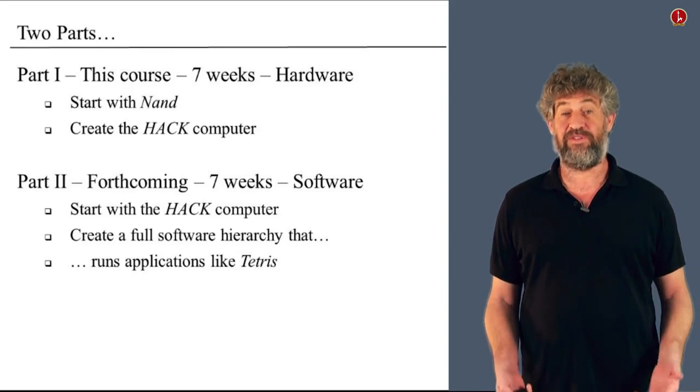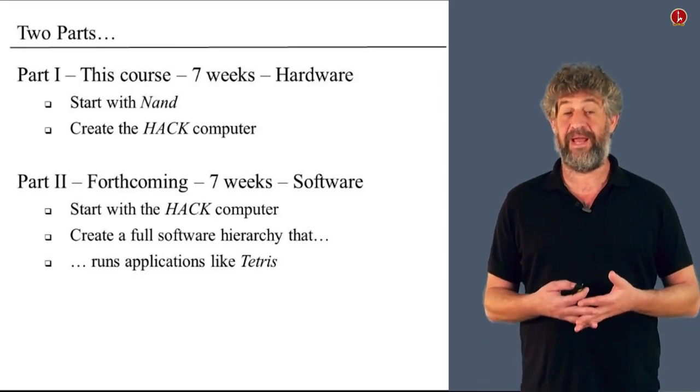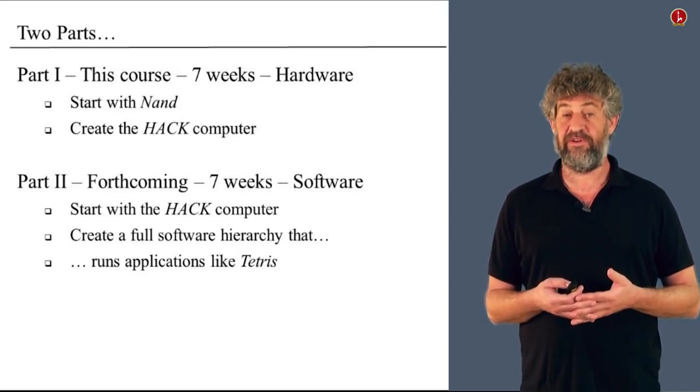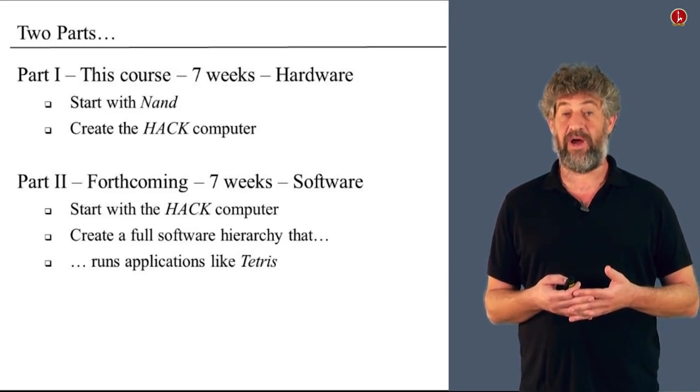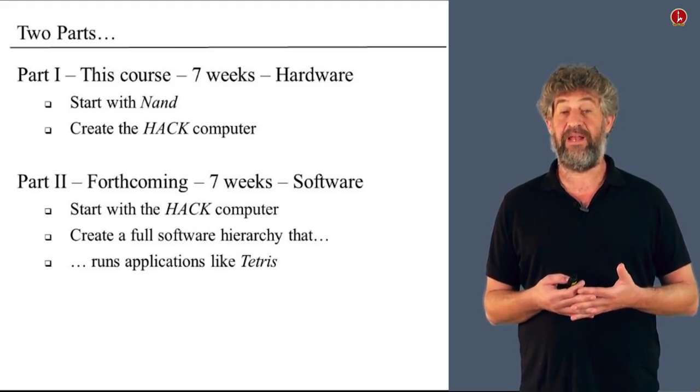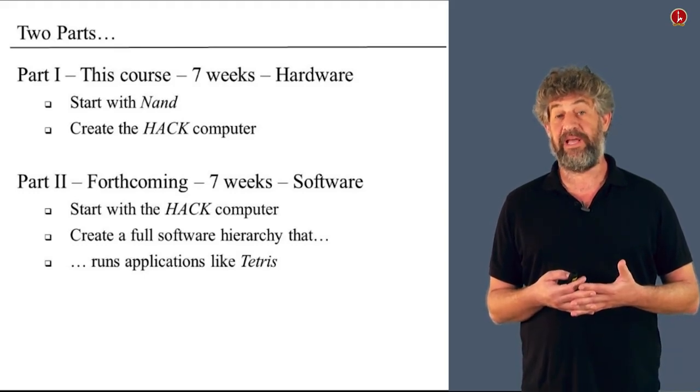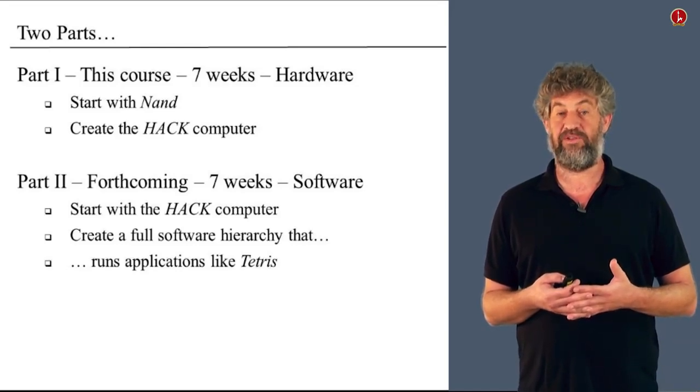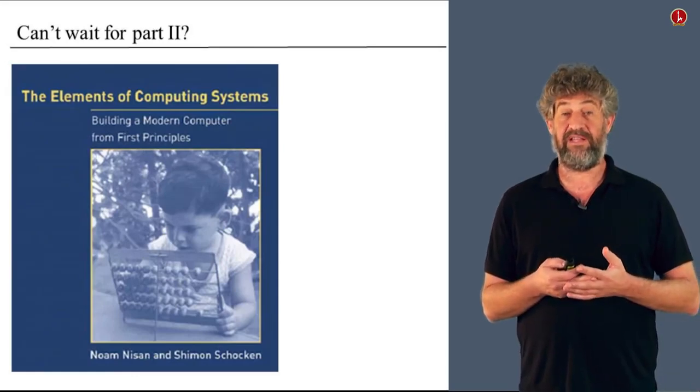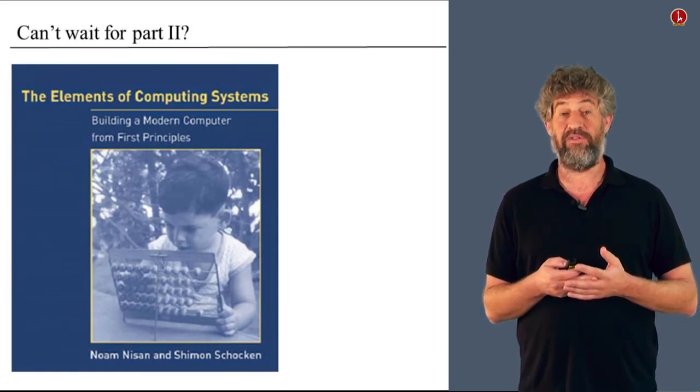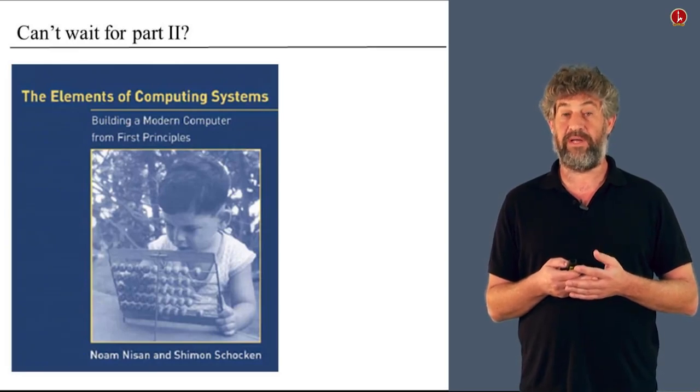In the second part of the course, which is going to be called, not surprisingly, from NAND to Tetris part two, we're going to start with the same hack computer that we've built in the first part of the course and continue adding a software hierarchy that will allow us to actually run any type of application that we write in a high level programming language. For example, an application like Tetris that gives this course its name, but also any other type of application that you may want to write. The second part of the course is not available on Coursera yet. If you really, after doing this course, you cannot wait for it, you can always go to our book which has all the information, including part two, and keep on working directly from the book.